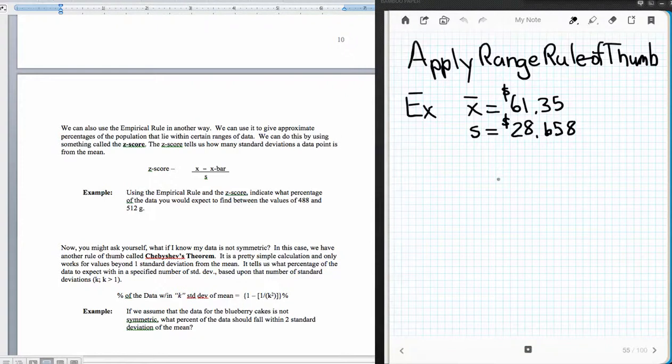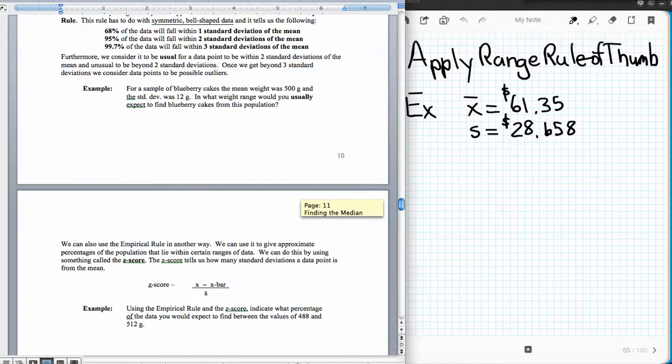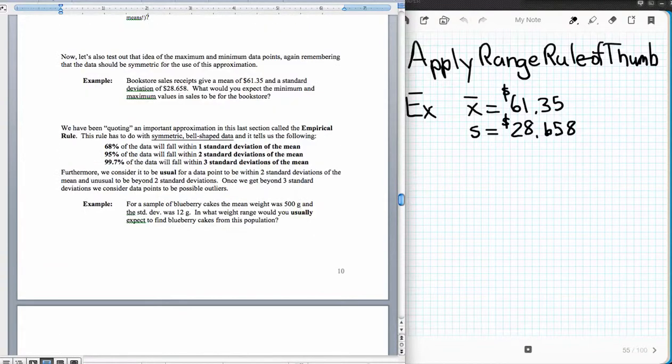So we're going to apply, first of all, the range rule of thumb and say, if we have a mean here and a standard deviation here, what would be the smallest usual value and the largest usual value? In other words, what's the minimum and the maximum values that we would expect to see? So we're looking here at this example on page 10 of my notes.